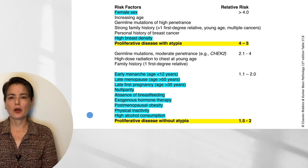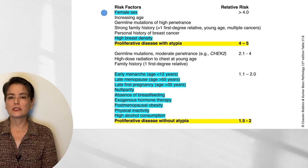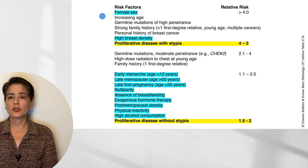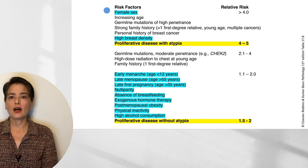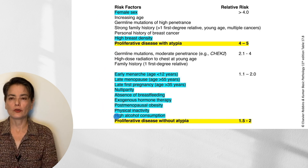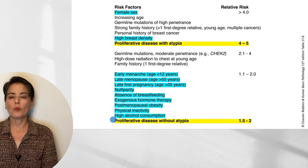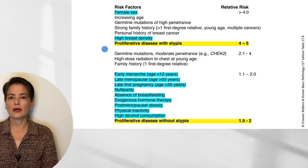This is a table modified from Robinson-Kumar Basic Pathology, Table 17.8, showing the relative risk associated with a variety of factors. Relative risk is considered when compared to an individual who does not have any of these risk factors. We have a group with risk greater than 4, an intermediate group with relative risk of 2.1 to 4, and a category with a fairly low increase in relative risk. The ones highlighted in blue are associated with increased lifetime exposure to estrogen, and two in yellow are the focus of the rest of this talk.